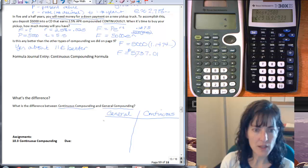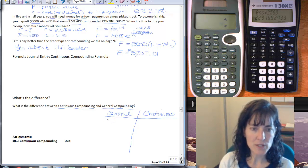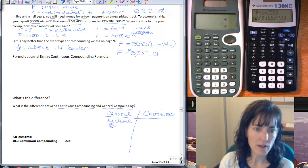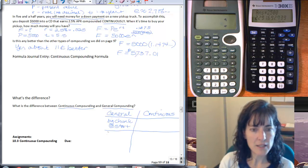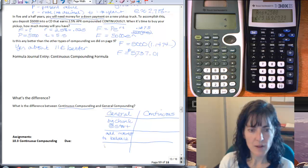And the first thing I want to do is think about what I know about general compounding. And here we start with a big chunk at the start, and then we add interest to balance, and then we have n compoundings.